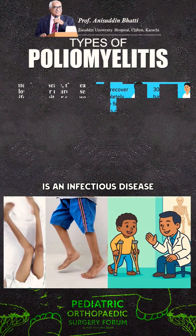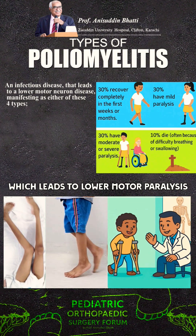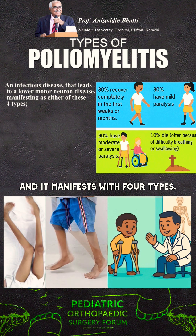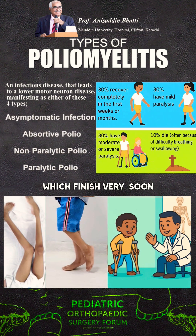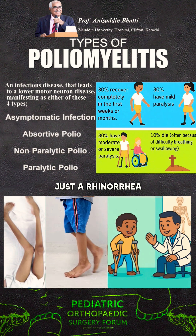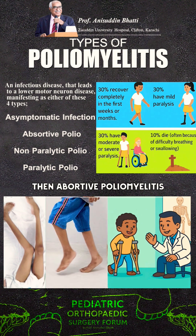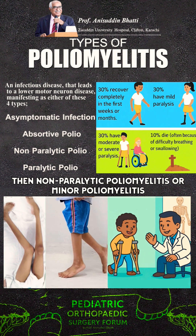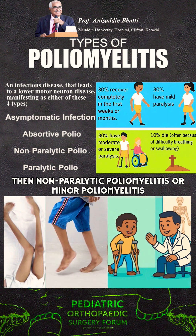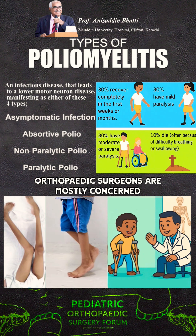Poliomyelitis is an infectious disease which leads to lower motor paralysis, and it manifests with four types: asymptomatic infection, which vanishes very soon with just rhinorrhea and flu-like symptoms; abortive poliomyelitis, with a few symptoms that then get abolished; non-paralytic poliomyelitis, also called minor poliomyelitis; and then paralytic poliomyelitis.